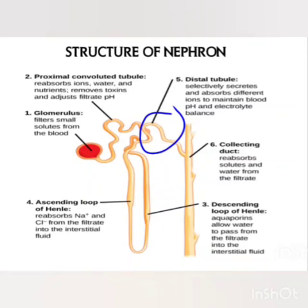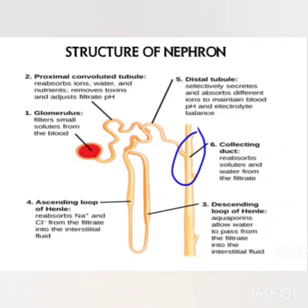Urine from the DCT passes into the collecting duct. The collecting duct is a long straight portion after the distal tubule and is the open end of the nephron. It extends from the cortex down through the medulla and is responsible for collecting urine from the DCT and passing it to the renal pelvis. Collecting ducts are of two types: proximal striped tubule and distal striped tubule.